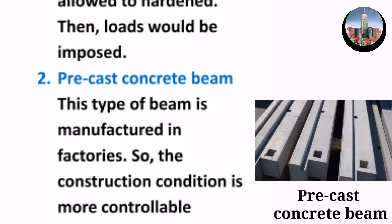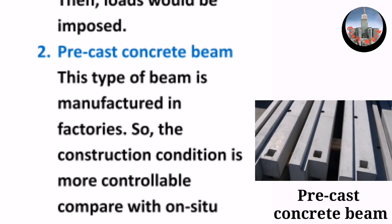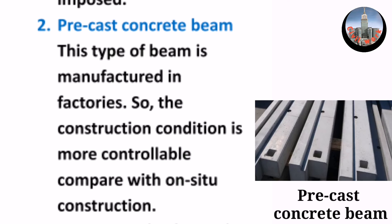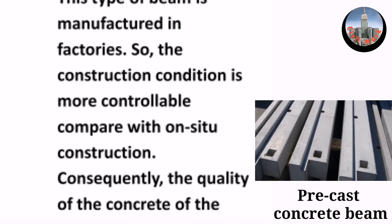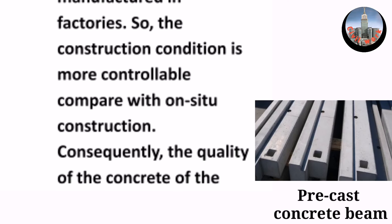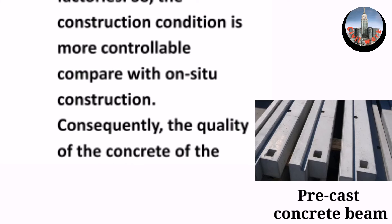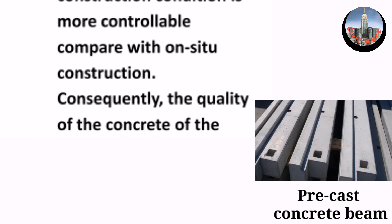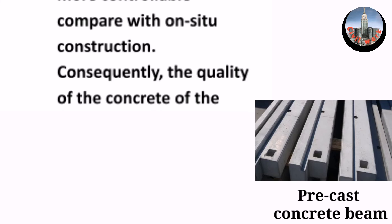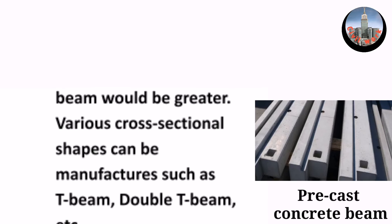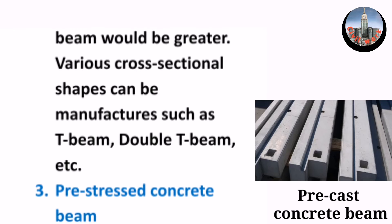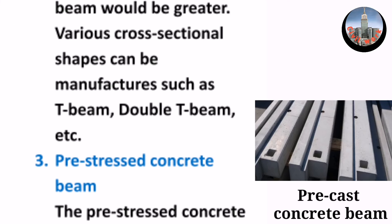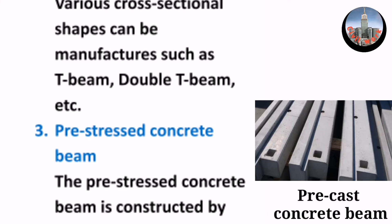2. Pre-cast concrete beam. This type of beam is manufactured in factories, so the construction condition is more controllable compared with on-situ construction. Consequently, the quality of the concrete of the beam would be greater. Various cross-sectional shapes can be manufactured such as T-beam, double T-beam, etc.